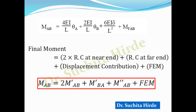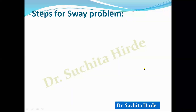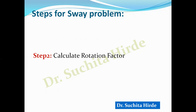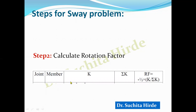Let us see the different steps in the analysis of a portal frame subjected to sway. The first step is to calculate fixed end moments and joint moments for the given load. After that, we calculate the rotation factor using a table of joint, member, relative stiffness K, summation K, where rotation factor equals minus half times K divided by summation K — which is minus half times the distribution factor in moment distribution method.